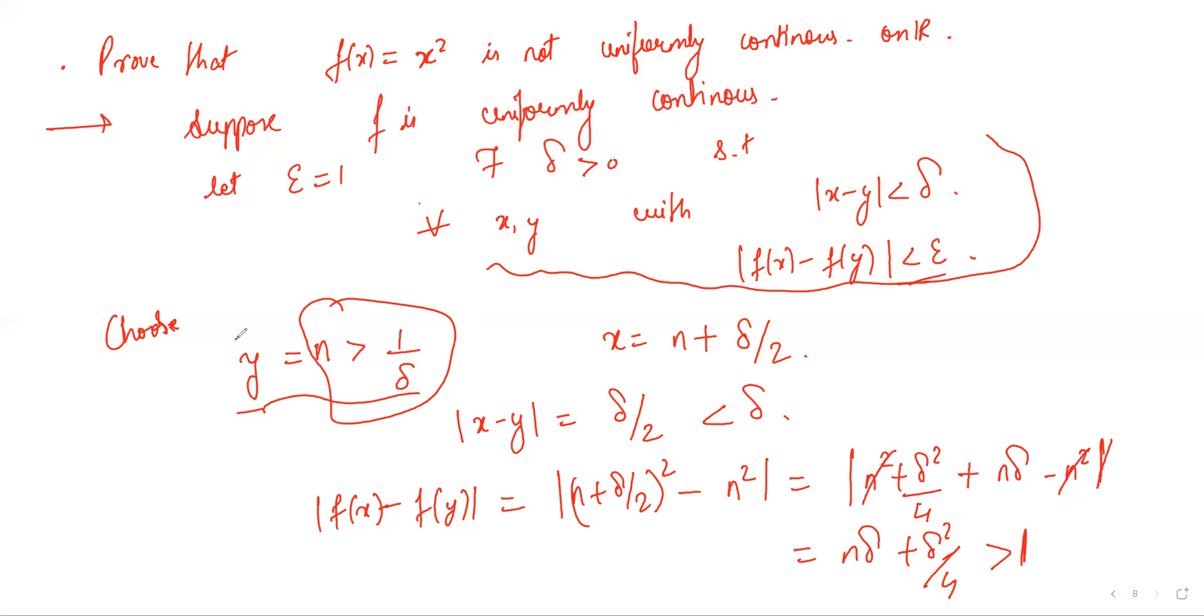So that's why I chose y in that particular way. And this is a contradiction to the uniform continuity condition. For this epsilon, you cannot or will never find a delta which works for all x y. Therefore, our function is not uniformly continuous.